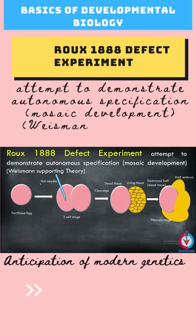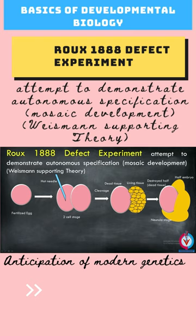When he killed one cell, he saw that the other cell was dead tissue, while the remaining cell was living tissue. After the division, he saw that a half-embryo was developed.